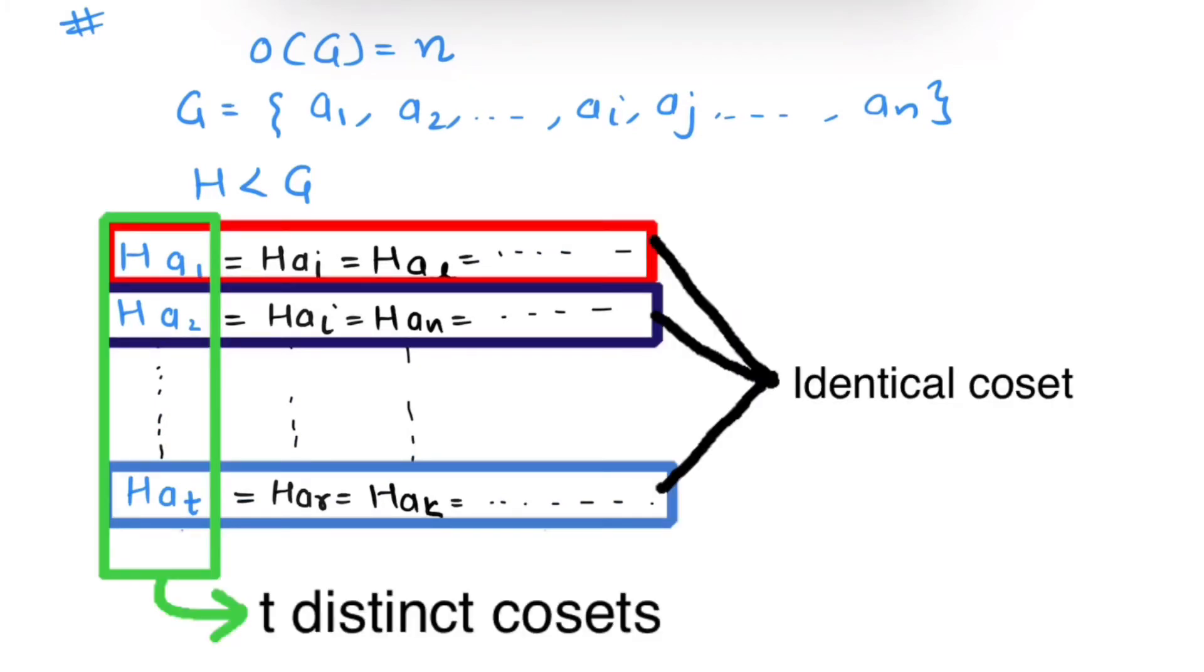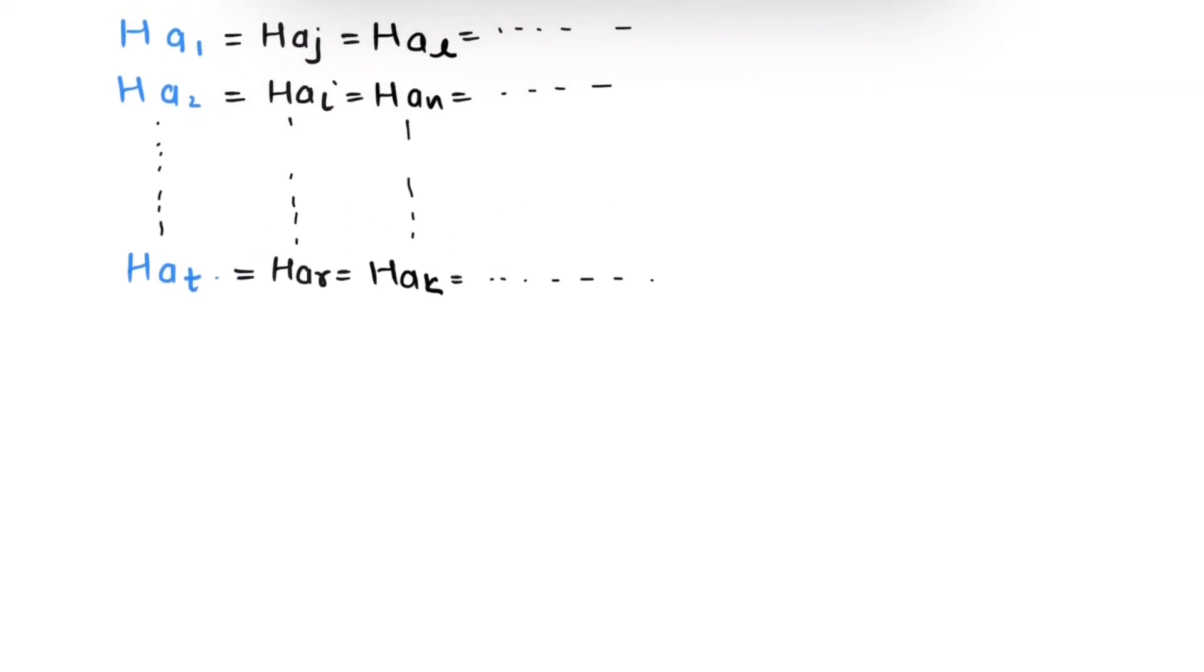These are identical and these are disjoint cosets. Now we can write group G as the union of these distinct cosets. We have t distinct cosets in total, so G will be Ha1 union Ha2 union Hat. The order of group G will be order of Ha1 plus order of Ha2 plus order of Hat. We know that the order of a coset equals the order of the subgroup, so this sum will be t times order of H.